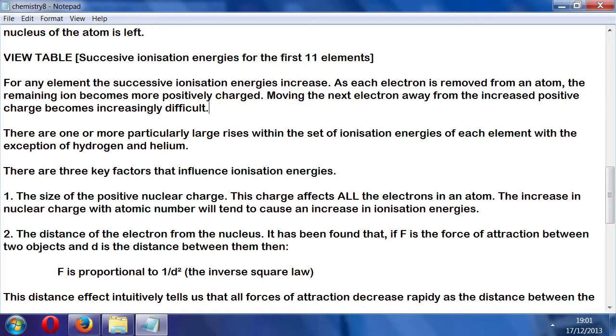The first factor influencing ionization energies is the size of the positive nuclear charge. This charge affects all the electrons in an atom because the electrons move like a body, like a solid block, like ants. The increase in nuclear charge with atomic number will tend to cause an increase in ionization energies.